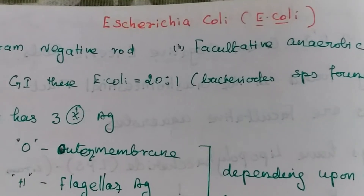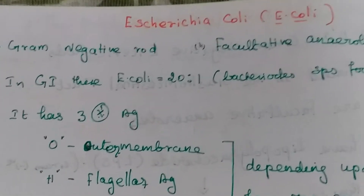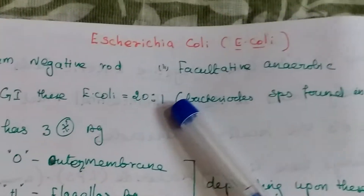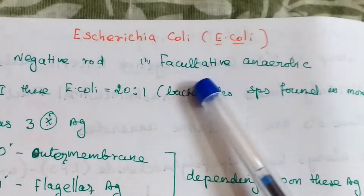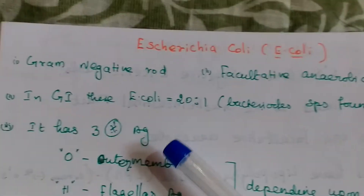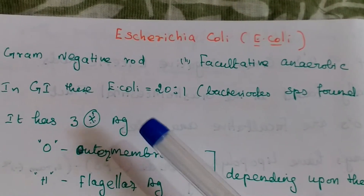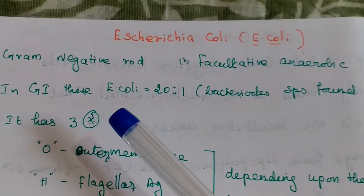Escherichia coli, short form E. coli, is a group of organisms. It is a gram-negative rod, facultative anaerobic organism. Mainly it is found in the gastrointestinal tract.